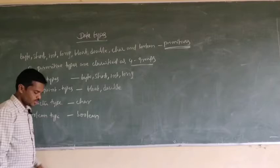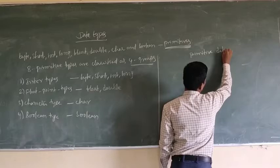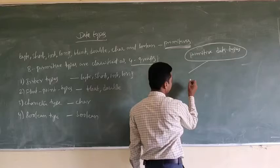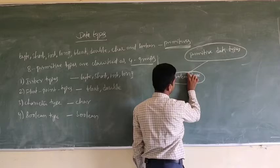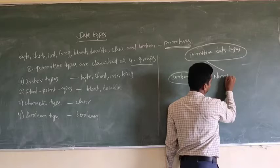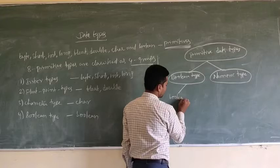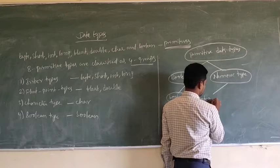Primitive data types. This will be mainly divided into 2 types: boolean type and numeric type. Under boolean type, only the boolean data type comes. Numeric type is again divided into 2 types: integer types and floating point type.